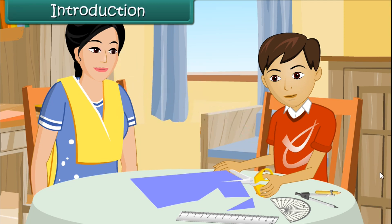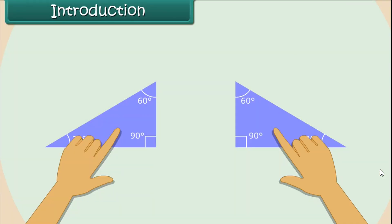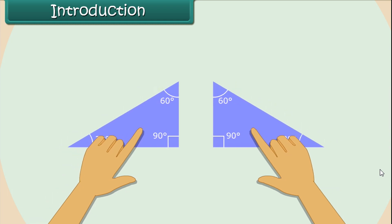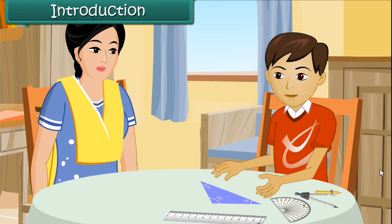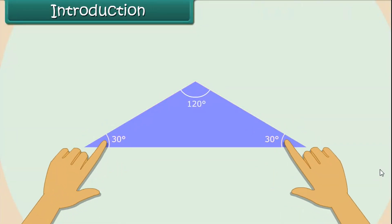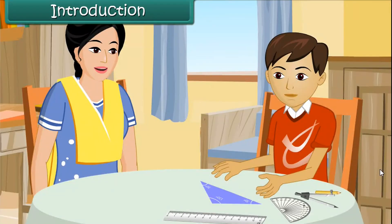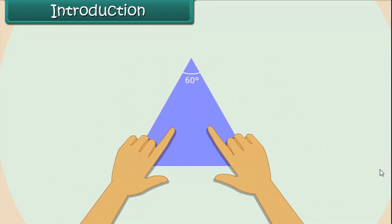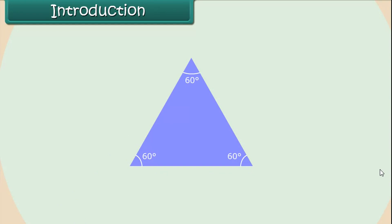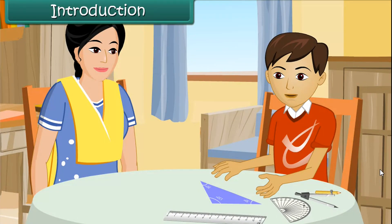Mom, look! I made a new triangle by joining two identical right-angled triangles. That's great, Nick. Did you observe the sides and angles of the new triangle? Yes, Mom — two sides and two angles are equal. Wonderful! Now join two right-angle triangles to create a new triangle with all sides and all angles equal. I have done that as well, Mom.